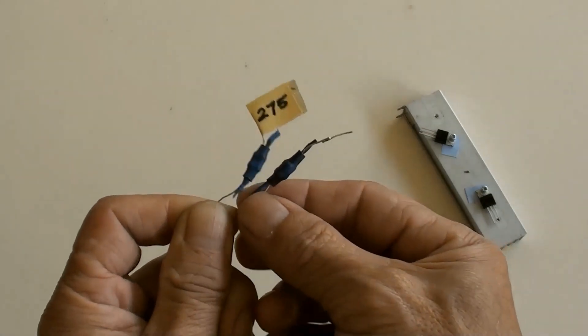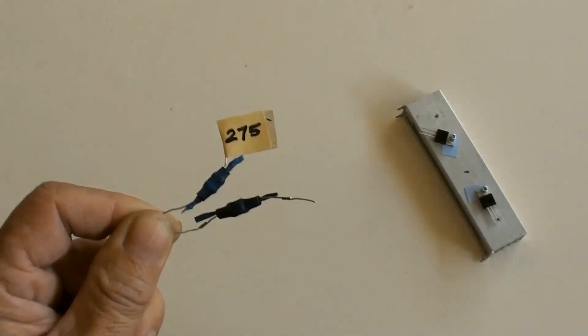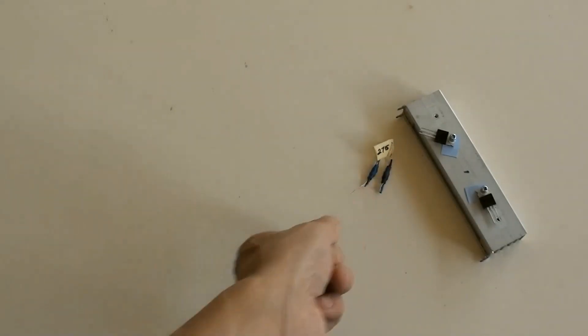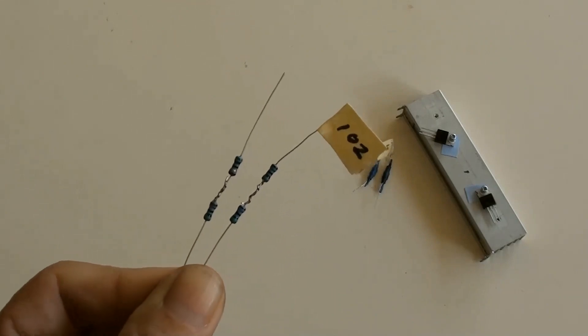These are DIY resistors of 275 ohms each, and so are those of 102 ohms each.